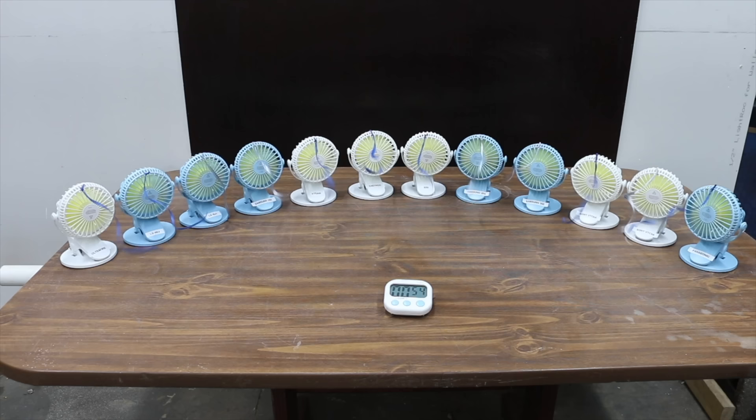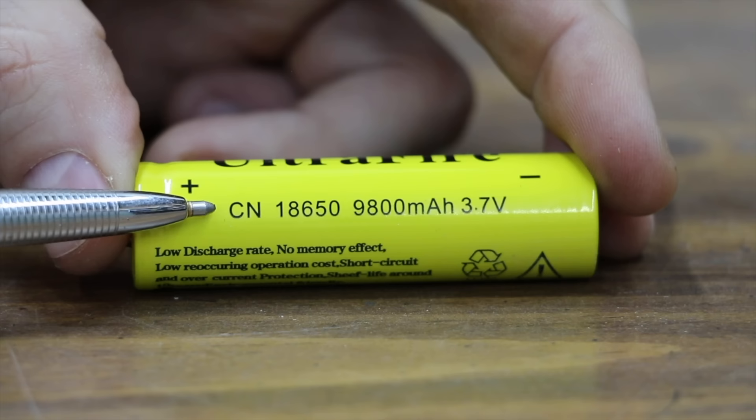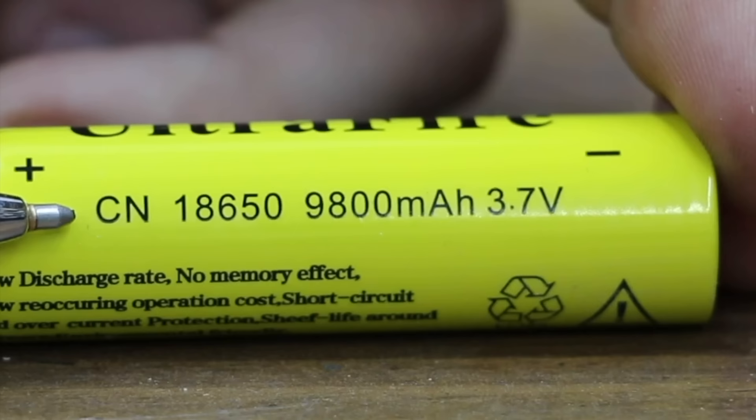I then installed the batteries and fans to compare the runtime. The UltraFire lasted 102 minutes. On the other hand, the Japanese and Korean batteries lasted more than twice as long. Considering the 9,800 milliamp rating and the awful performance, the UltraFire definitely deserves to be on the worst 10 products list.